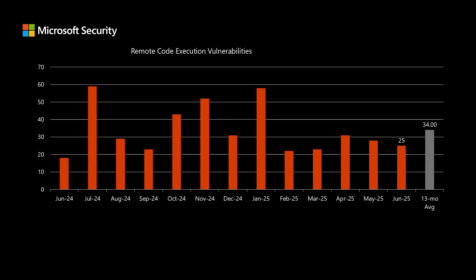Before I dig into today's release, I like to compare it to the previous 12 months to see how it stacks up. There are 66 newly disclosed CVEs in today's release. Of those, 25 are remote code execution vulnerabilities — a little bit lower than our average of 34 per month over the past 13 months. Remote code execution is the type of impact that typically provides the most risk, as it would allow a threat actor to install software and perform other high-level activities.